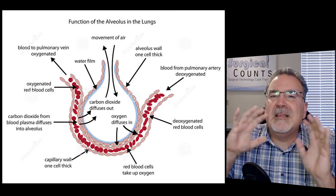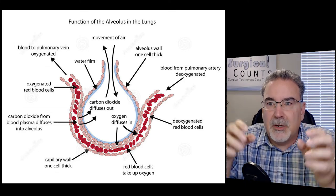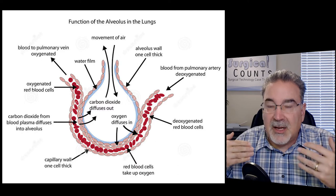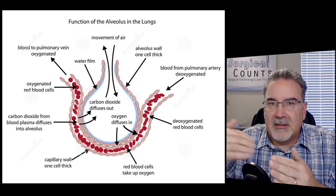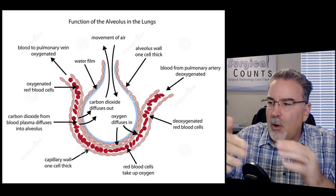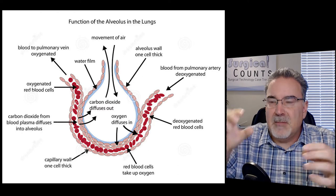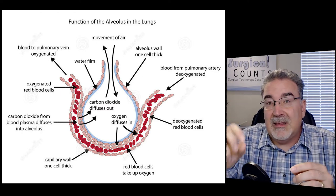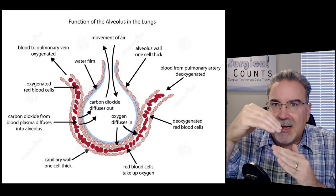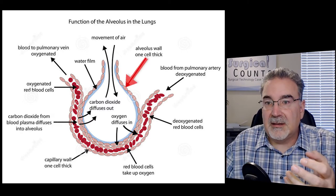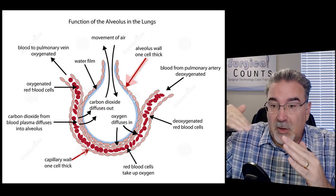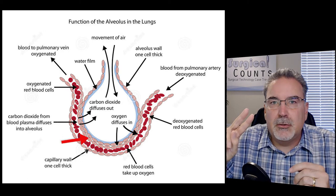These alveoli are completely covered with tiny capillaries because we need to bring blood really close to the outside air — that's how we get oxygen into our body and carbon dioxide out. The closer the blood is to the air, the faster and easier that gas exchange happens. In the lungs, we create a safe space where we can bring blood really close to the outside air and have gas exchange happen very quickly. The wall of the alveolus is only one cell thick, and the capillary is only one cell thick — so the blood cells and outside air are only two cells apart.